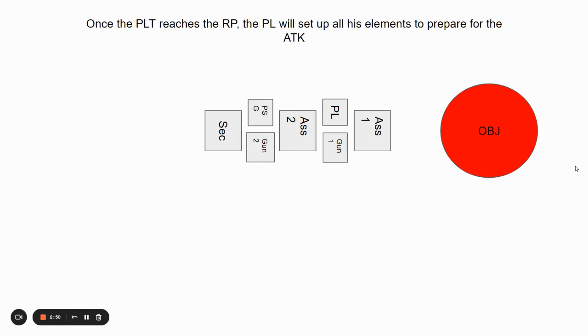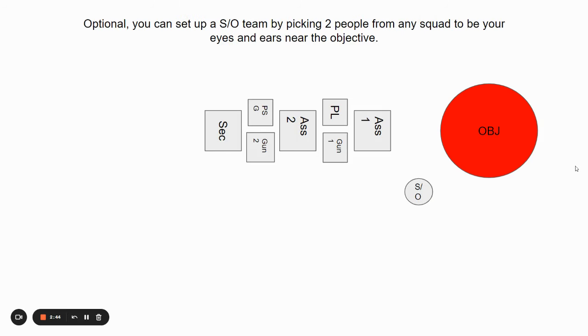Once they reach the RP, the platoon leader will set up all of his elements to prepare for the attack. This is optional: you can set up a security and observation team by picking two people from any squad to be your eyes and ears near the objective, so they can give you constant updates by radioing to the PL what's going on.